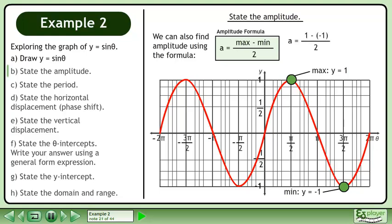Plug the maximum and minimum into the amplitude formula. This gives us 2 over 2, which becomes 1. This is the same amplitude we found by inspecting the graph earlier.